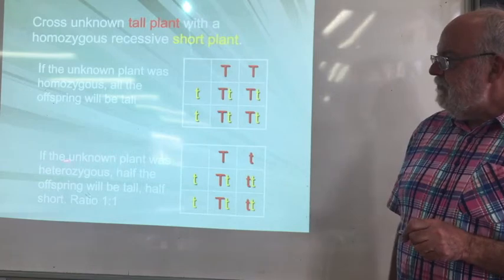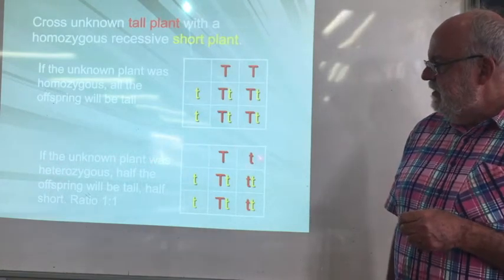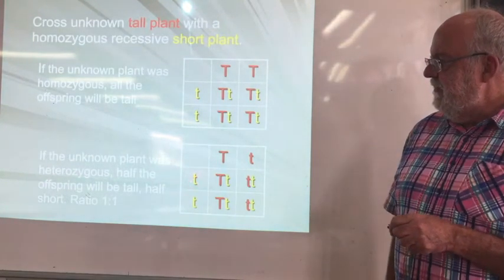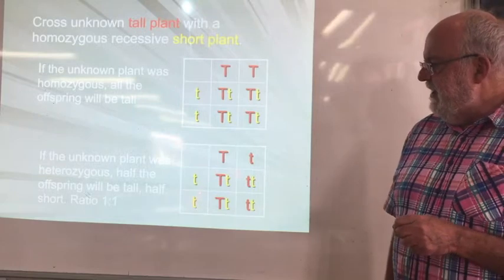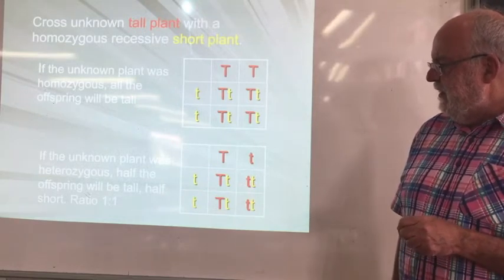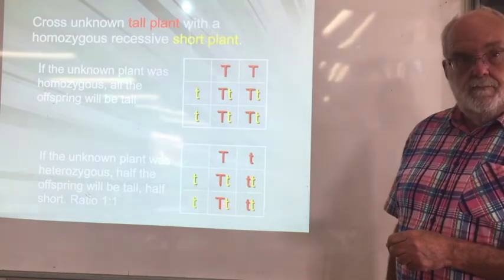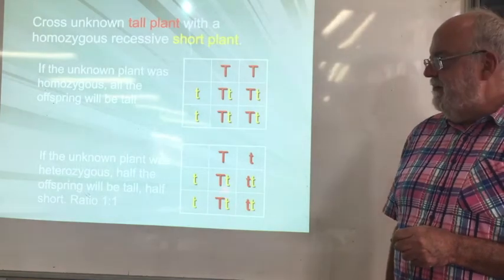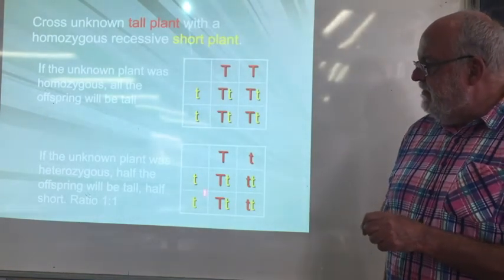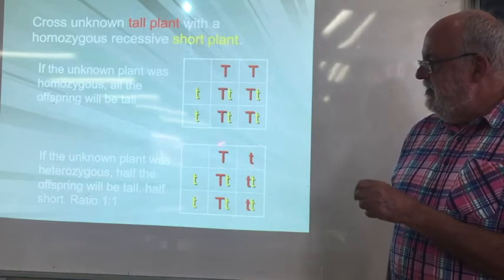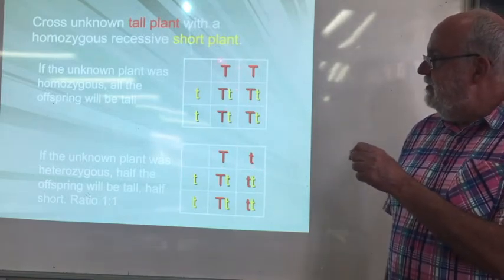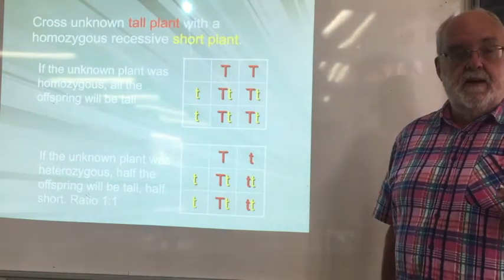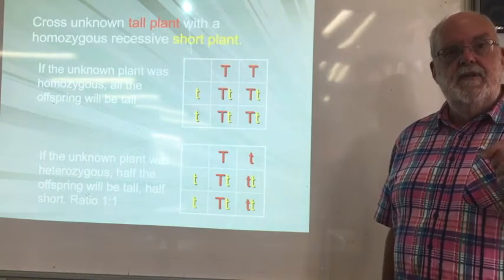If on the other hand the unknown plant was heterozygous — remember that's still going to be tall, so you don't know — cross it with the homozygous recessive short plant and you're going to get half of the offspring short and the other half tall. If you have that situation and you're trying to get rid of the recessive characteristic, you won't use this individual for breeding purposes. You'll discard that one and keep the homozygous ones. So after a few generations a breeder of animals or plants can get rid of the recessive allele.